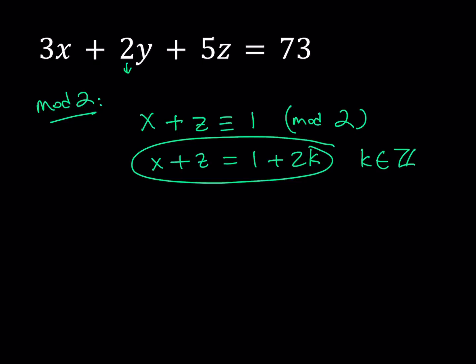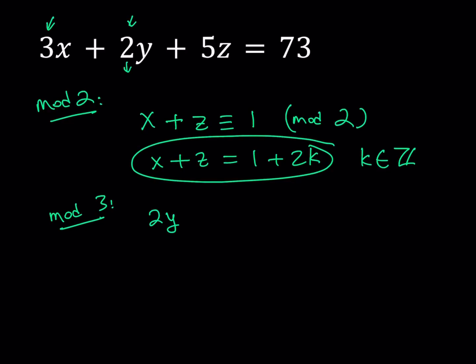Let's look at this equation from another angle, which is mod 3. The reason why I pick mod 2 and mod 3 is because of these coefficients. You might be wondering, why do I not use mod 5? You could, there's nothing wrong with that. So if I use mod 3, obviously x disappears and then I get 2y. And then 5z becomes 2z. And 73 is going to be 1 mod 3 because 72 is divisible by 3.